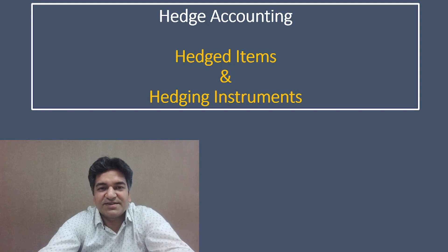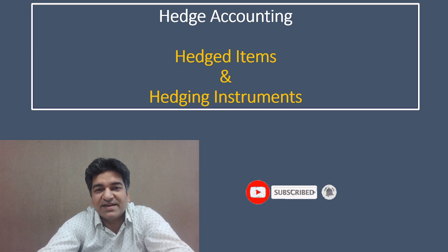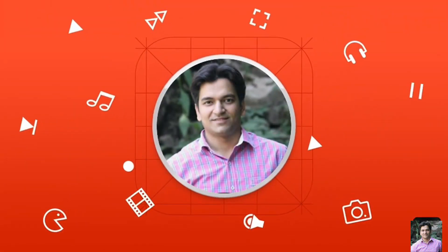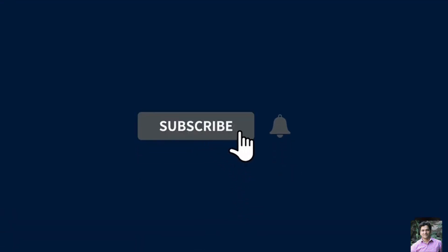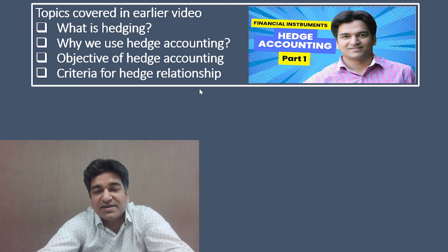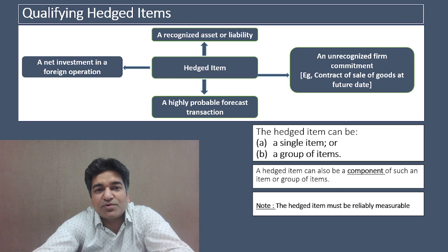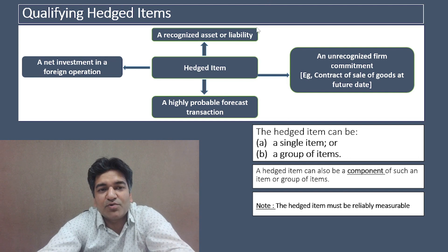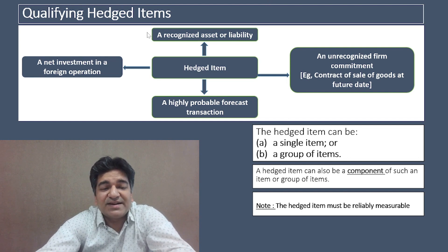Welcome to another session on hedge accounting. In this session, we are going to cover what are qualifying hedged items and what are qualifying hedging instruments. In the previous video on hedge accounting part one, we have already covered what is hedging, why we use hedge accounting, the objective of hedge accounting, and the criteria for hedging relationships. In this video, we are going to discuss qualifying hedged items and subsequently qualifying hedging instruments.